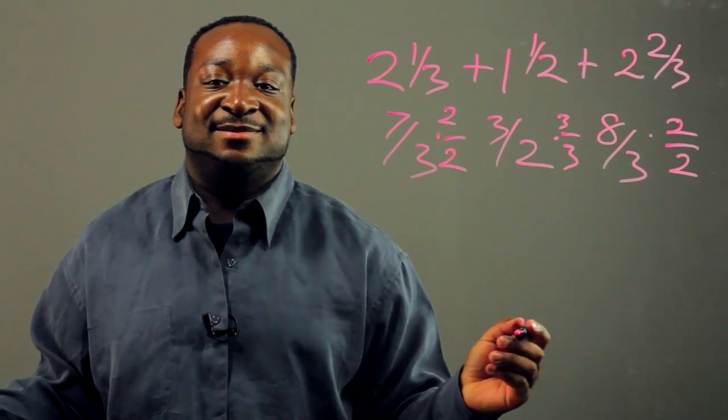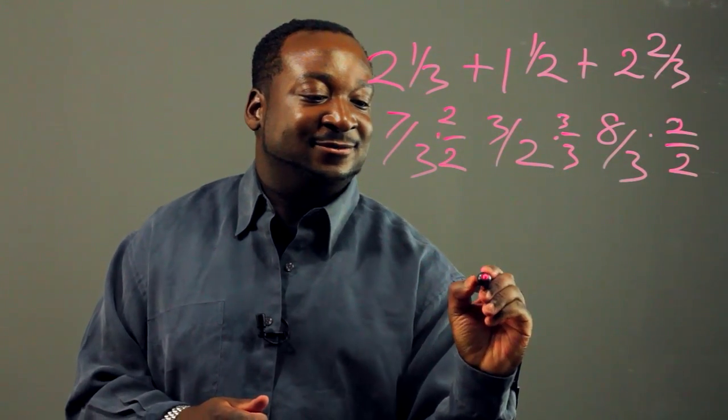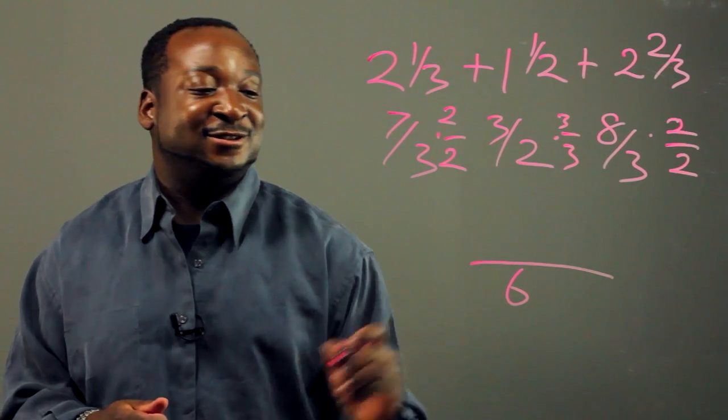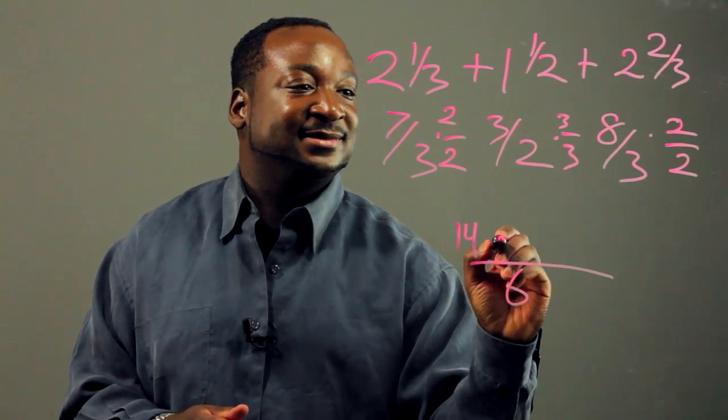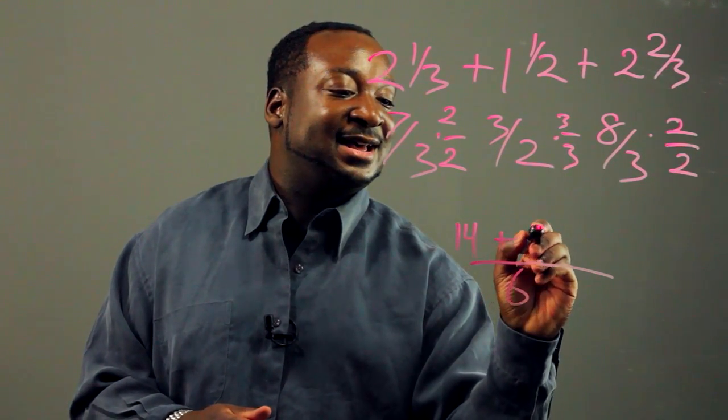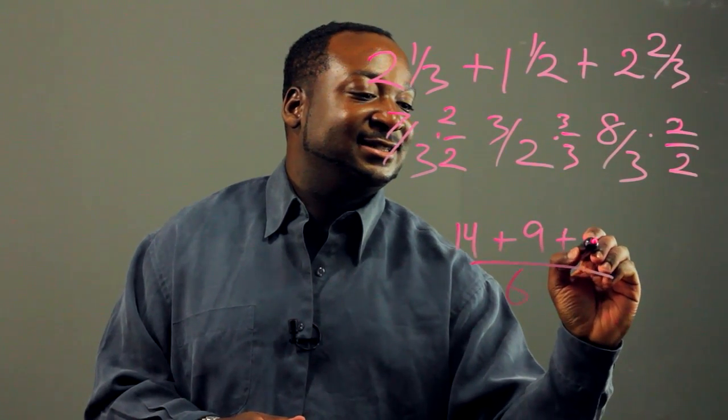And now we have a common denominator, which is six, and our numerator is going to be seven times two, which is 14, three times three, which is nine, eight times two, which is 16.